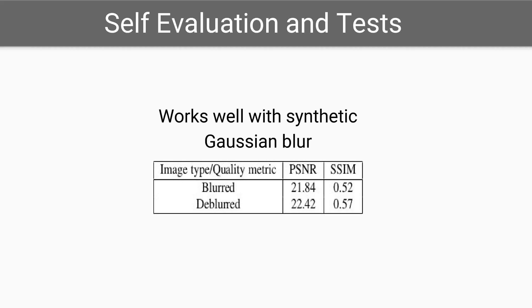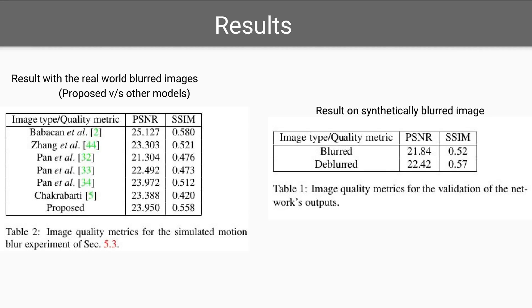For motion blur, 70 images of the AFLW dataset yielded a good result. The results show that synthetically blurred images with Gaussian noise compared to the output of the network indicates that the method works well with Gaussian blur. Another test result, in which the authors simulated real-world blurred images, shows that the proposed algorithm performs similarly to other contemporary deep blurring methods.